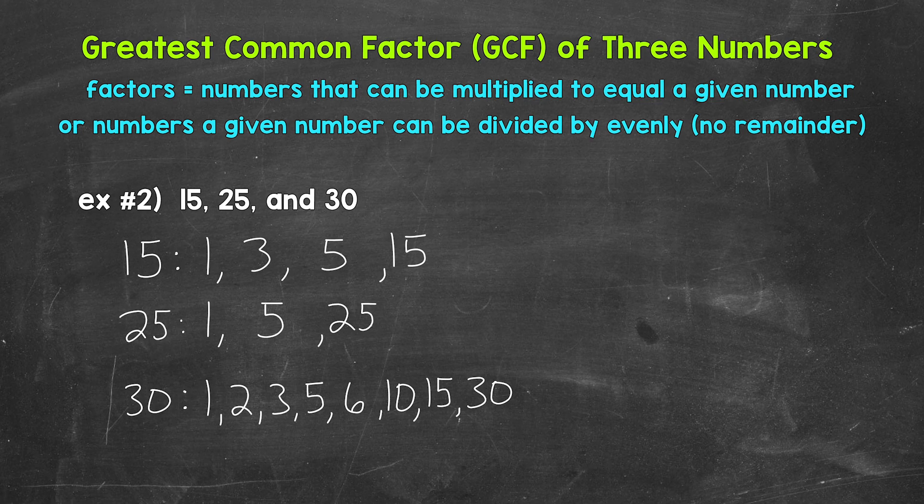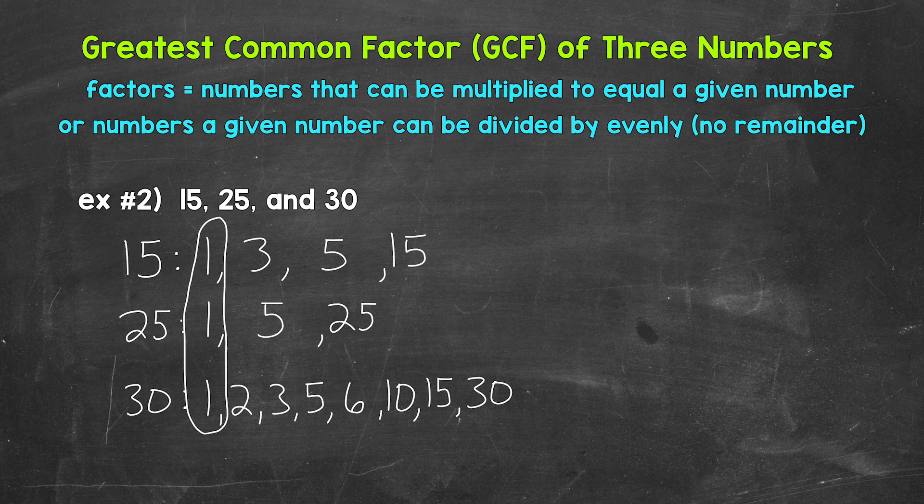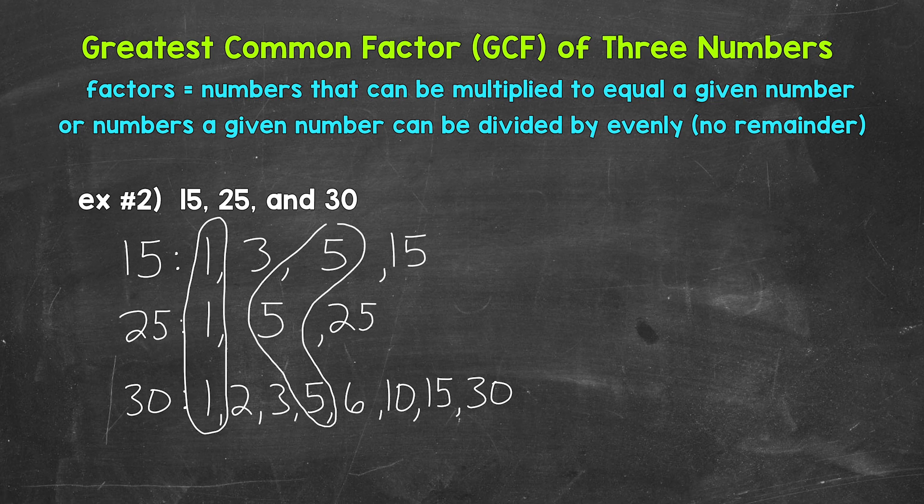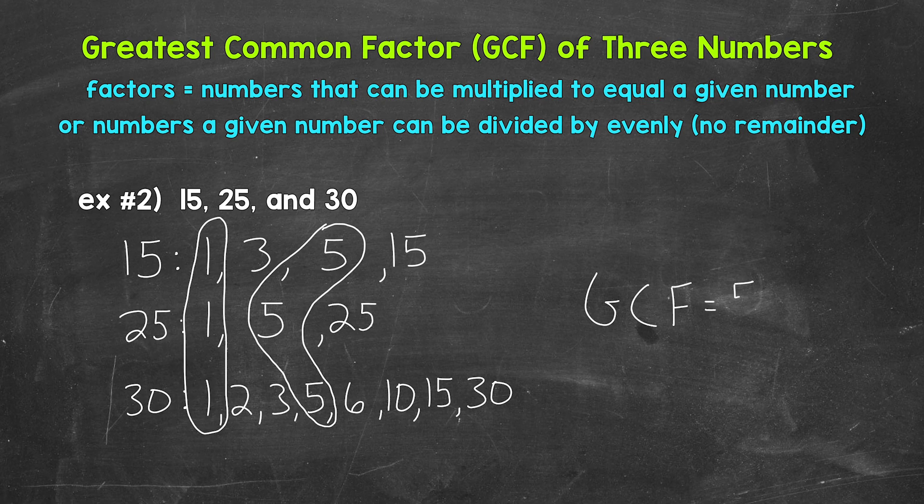Now that we have the factors for each of our numbers listed, we need to look for common factors and specifically the greatest common factor. So let's look for any factors that all three numbers share, and then look for the greatest common factor. So 1 is a common factor, and then 5 is a common factor. So the greatest common factor is 5. The GCF, the greatest common factor, is 5.